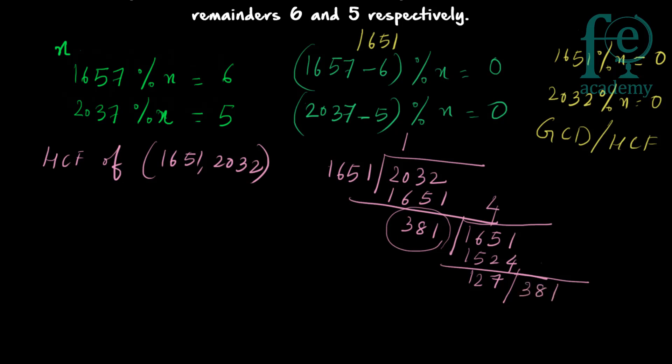127 × 3 = 381, so 381 divided by 127 gives remainder 0. Once the remainder becomes 0, the divisor at that step is your HCF. When the divisor is 127, you got remainder 0. So what is the highest common factor?